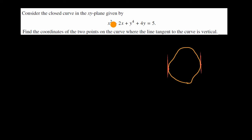What we could do is use implicit differentiation to find the derivative of y with respect to x, and think about the x and y values that would give us a situation where that derivative is nonzero in the numerator and zero in the denominator. So let's do that.